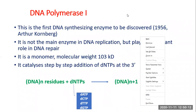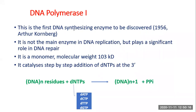DNA polymerase I is basically the first DNA synthesizing enzyme to be discovered. It was discovered by Arthur Kornberg back in 1956, and it was such a path-breaking discovery at that time that he got the Nobel Prize a couple of years later, in 1959 — even before Watson and Crick got their Nobel Prize for predicting the DNA double helical structure.